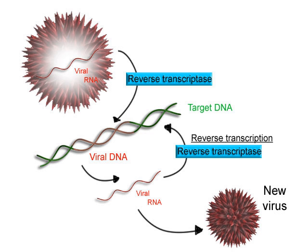Transcription begins with the binding of RNA polymerase, together with one or more general transcription factors, to a specific DNA sequence referred to as a promoter, to form an RNA polymerase-promoter complex. In the closed complex, the promoter DNA is still fully double-stranded. RNA polymerase, assisted by one or more general transcription factors, then unwinds approximately 14 base pairs of DNA to form an open complex, in which the promoter DNA is partly unwound and single-stranded. The exposed single-stranded DNA is referred to as the transcription bubble. RNA polymerase then selects a transcription start site, binds to initiating and extending NTPs, and catalyzes bond formation to yield an initial RNA product.